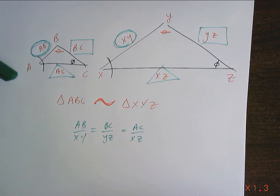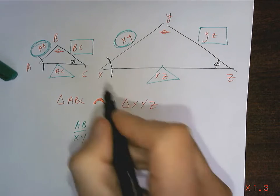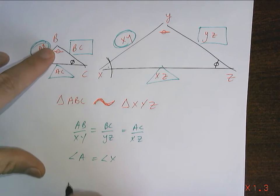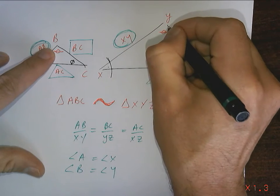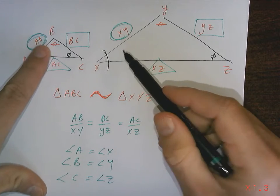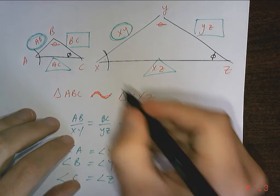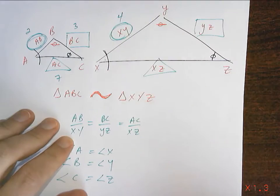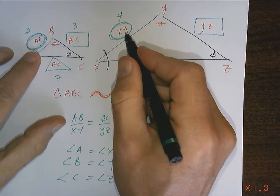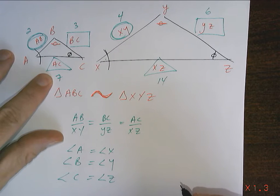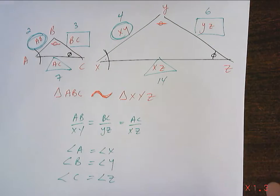So corresponding angles are equal, and corresponding sides won't be equal — definitely not — but the ratio will be. For example, if this triangle has sides 2, 3, and 7, and the corresponding side in the other triangle is 4, then 2 was multiplied by 2. So the other sides must be 6 and 14. The ratio has to stay the same — this triangle is twice as big, scaled by a factor of 2.